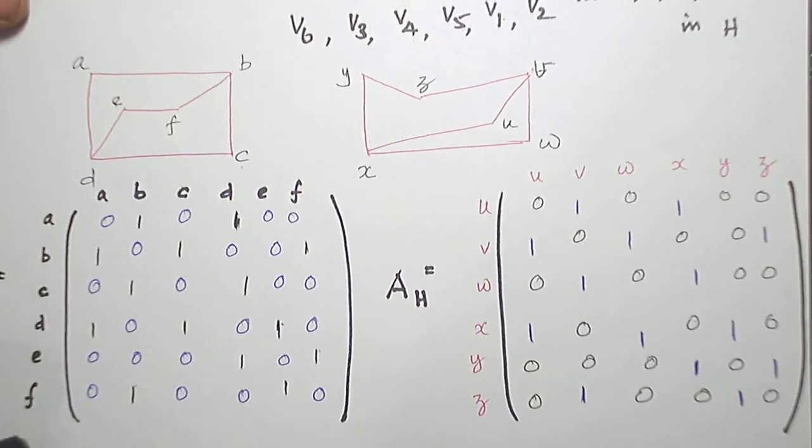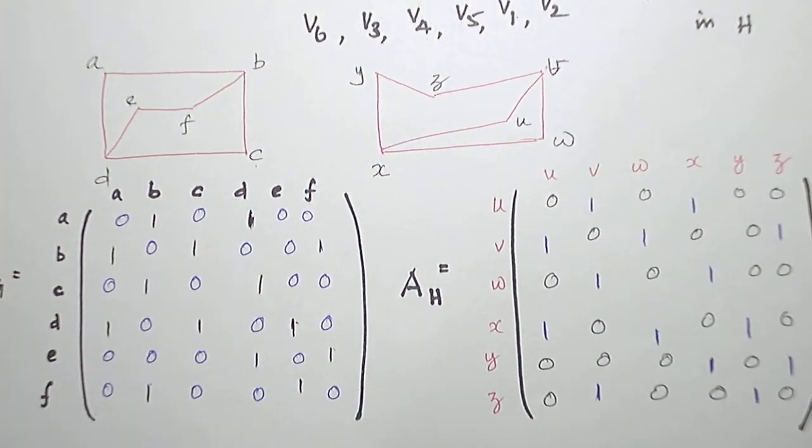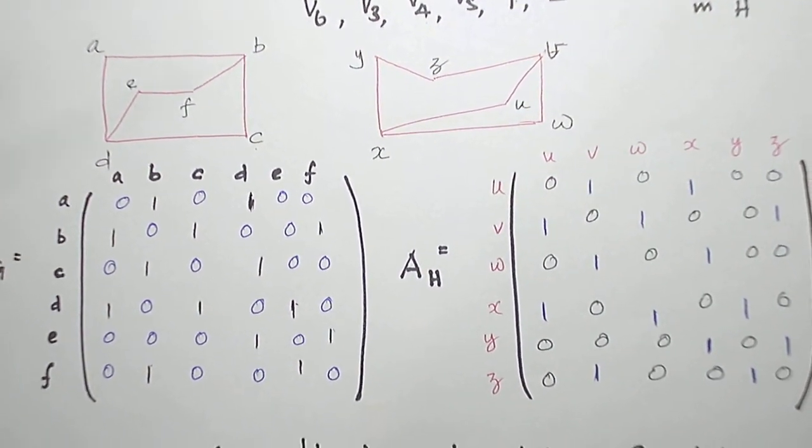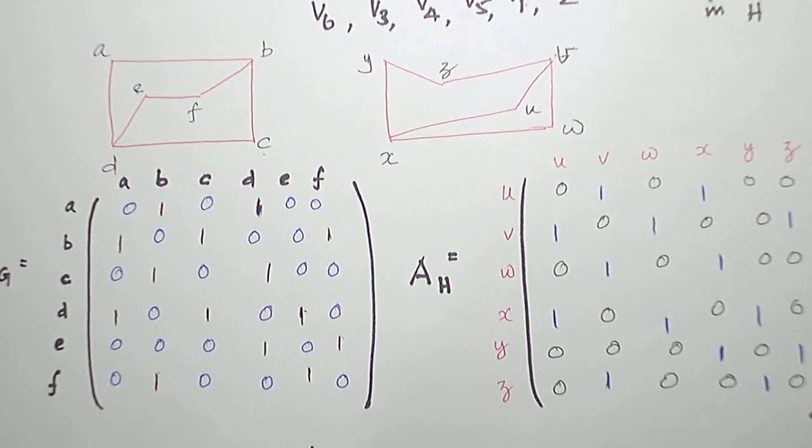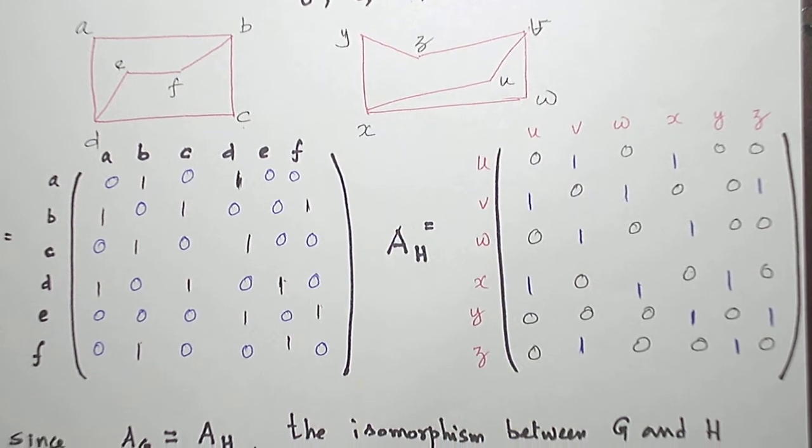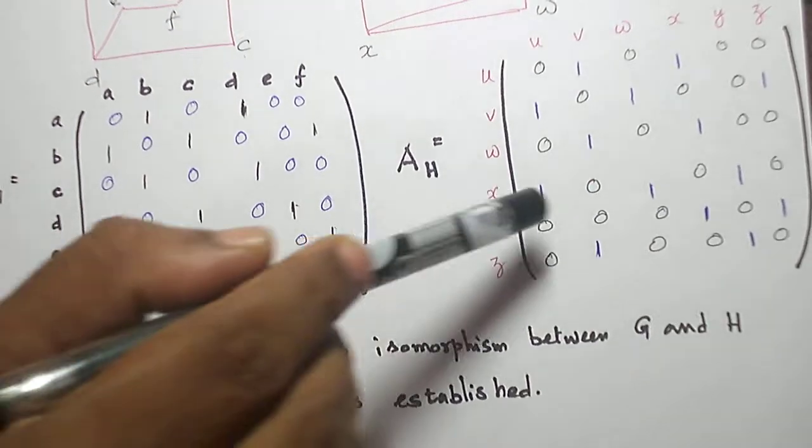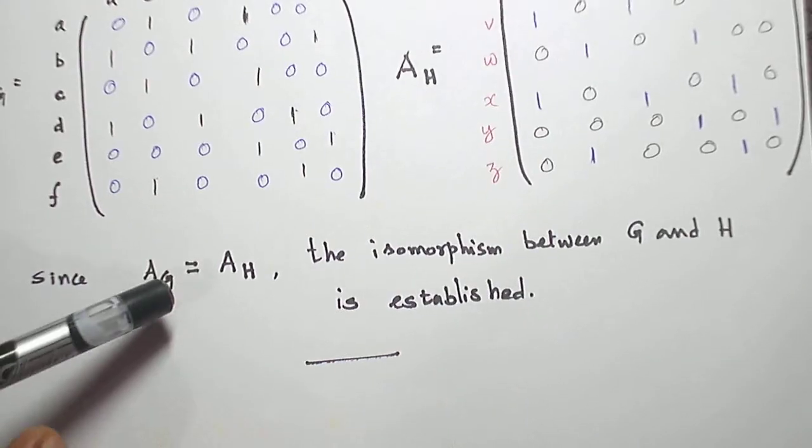From this labeling, a to f, u to z, you know how to write the adjacency matrices. If two vertices are adjacent, I put one. If they are not adjacent by an edge, I put zero in that corresponding entry. So adjacency matrices are written and compared. We saw that A_G equals A_H.